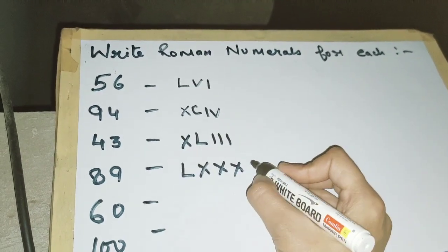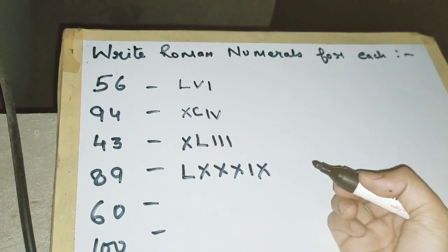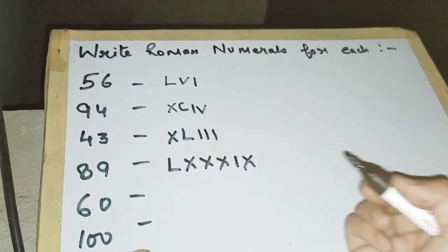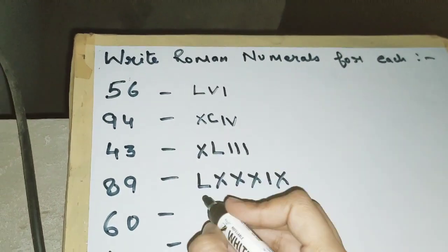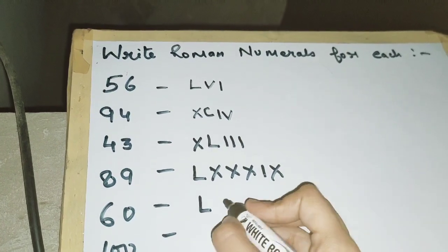Then for 9 we write I and X, so this is 89. Now for 60, we write L (50) and we add 10, so we write X. This is 60.